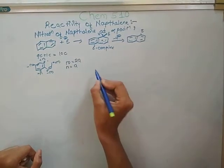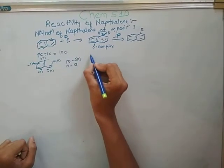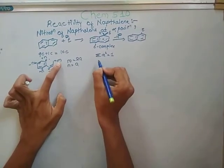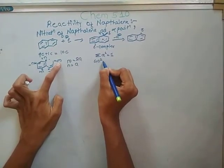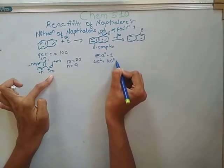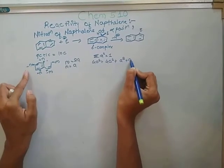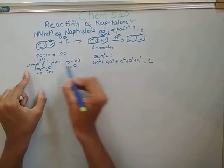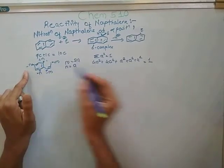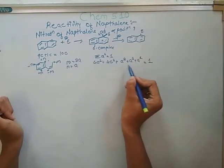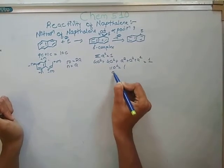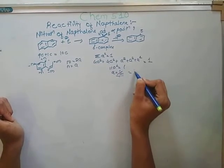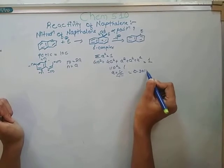We calculate the charge density. We know summation of a-squared equals 1. Here M equals 2a, so we have 4a-squared plus 4a-squared plus a-squared plus a-squared plus a-squared equals 1, which gives 11a-squared equals 1. Therefore a equals 1 over root 11, which equals 0.3015.